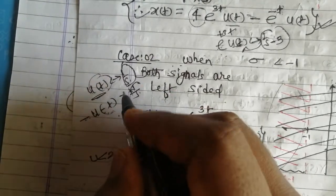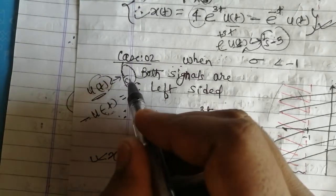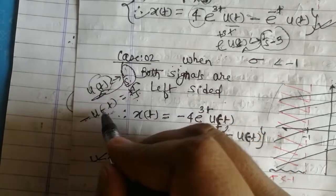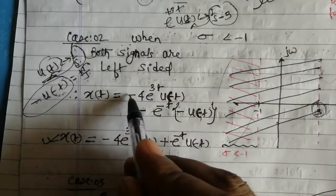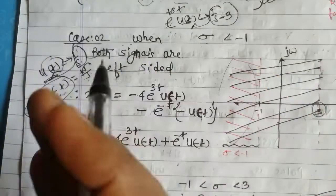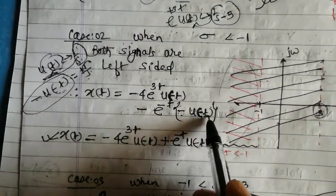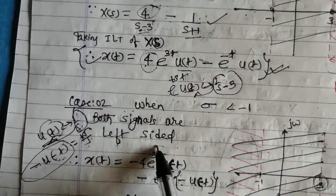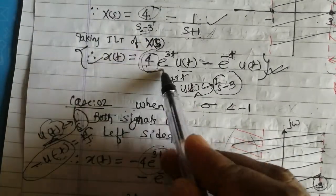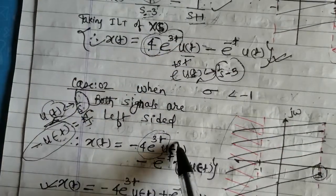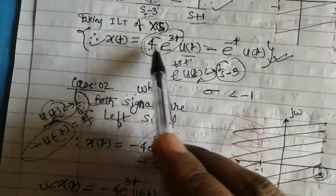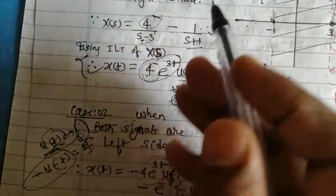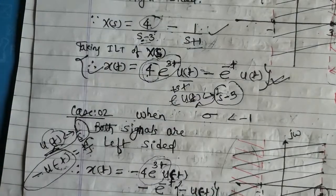This shows how important the role of ROC is. If the ROC says right-sided, we write u(t); if the signal is left-sided we write -u(-t). So for Case 2 (σ<-1, left-sided), the inverse Laplace transform uses -u(-t) for both terms. The exponential and amplitude parts remain the same — only u(t) is replaced by -u(-t) to indicate left-sidedness.